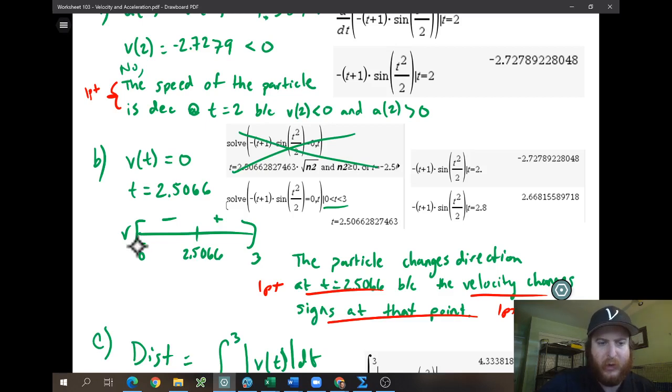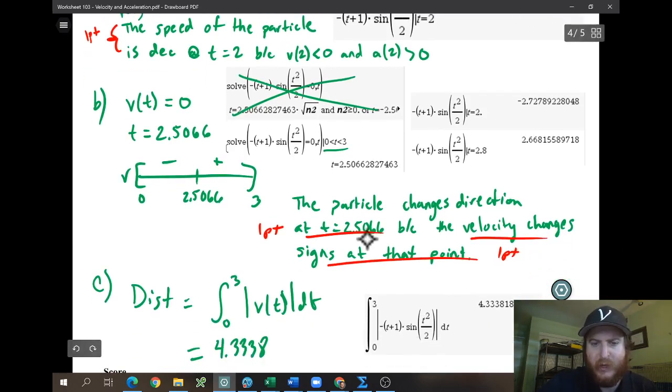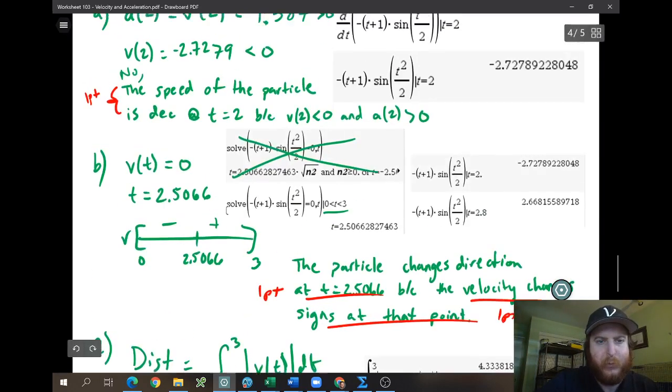Okay, then we're going to make our number line. And we're going to plug in. We already plugged in too, so you don't have to replug it in. We know it's negative here. So plug in something bigger than 2.5. I did 2.8. I got a positive. And so we would say the particle changes direction at time 2.5 because the velocity changes signs. You need to have both this explanation and this number line. And you need to label your number line. Okay, label your number line as V.